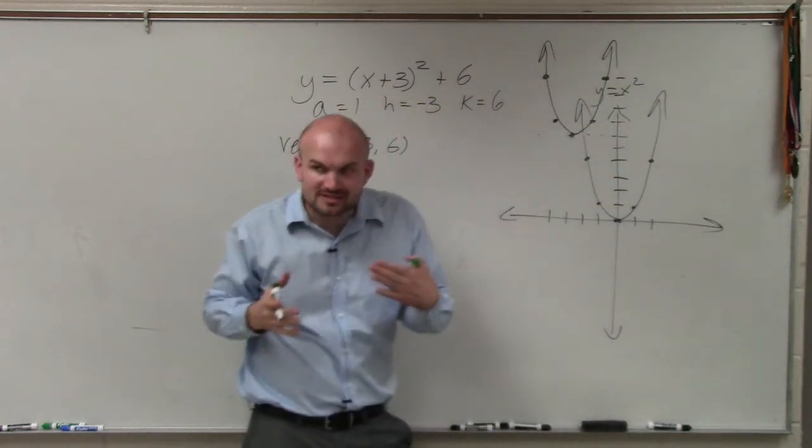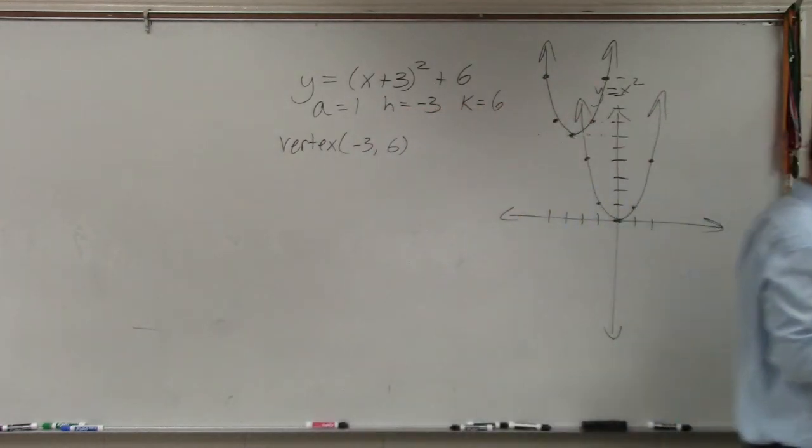So what's nice about vertex form, which I'm trying to explain to you guys to really understand: standard form, we always did a table. We always had to do a table, right? But for vertex form,